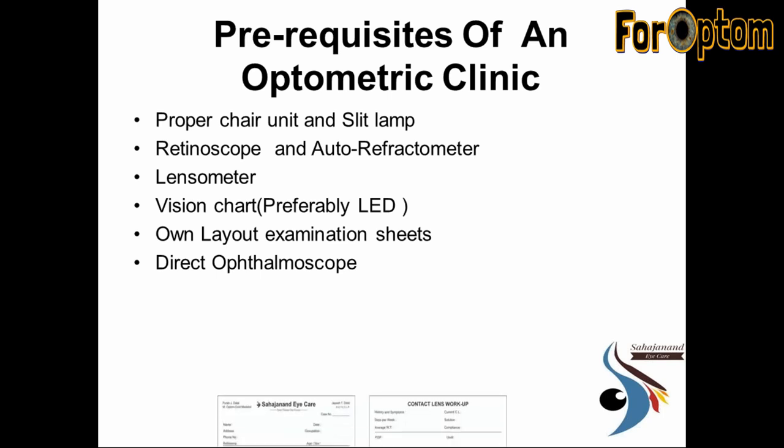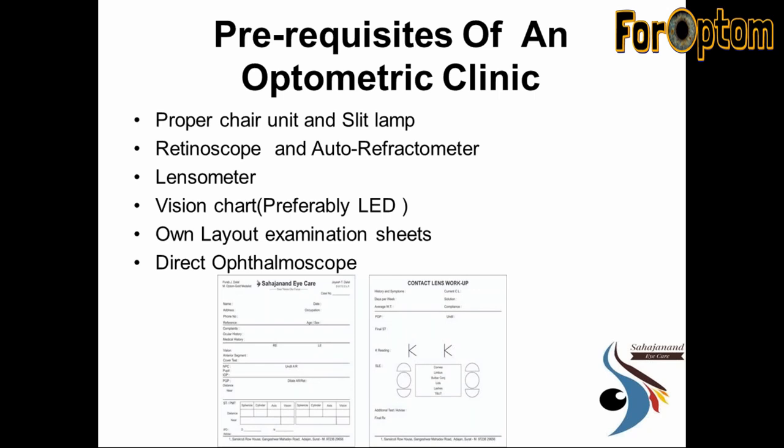You should always have your own examination layout — don't just write anything on plain paper. You should have your own sheet. The front part of the examination sheet includes basic demographic data and normal refraction. As a contact lens practitioner, I have kept a separate workup sheet for contact lens. If you are practicing only as a general optometrist, just keep the front part. Always keep this data — it will help you in future services and you can also store it in a computerized structure, but raw data is very important.